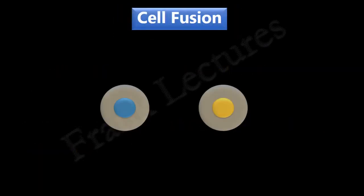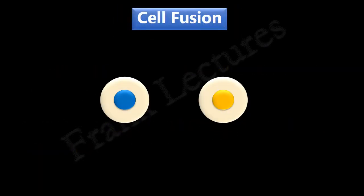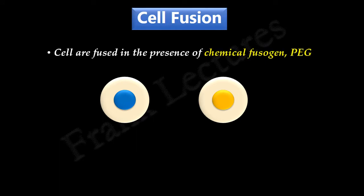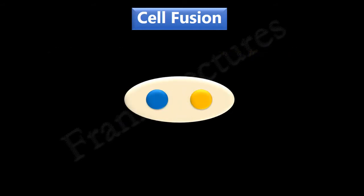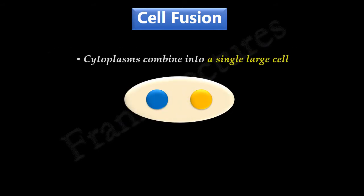Suppose these are two different types of cells, represented by X and Y. These cells are allowed to fuse by exposing them to the chemical fusogen polyethylene glycol. The cytoplasms of these two cells combine and form a single large cell with two nuclei. This cell is known as a heterokaryon.